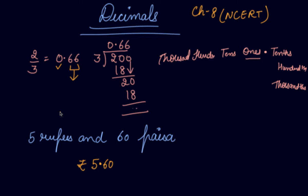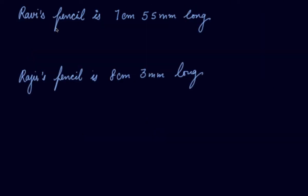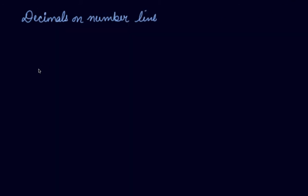If I say write this in the form of decimals: Ravi's pencil is 7 cm and 55 mm long — 7 cm is the whole part and 55 mm is the decimal part, written as 7.55 cm. If Raju's pencil is 8 cm and 3 mm long, that is written as 8.3 cm.